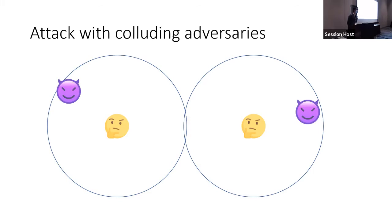Unfortunately, it turns out this is insecure if there are multiple adversaries that are colluding and trying to jointly convince the verifiers of an incorrect position. Two adversaries, one on each side, can jointly convince the verifier that they are in the middle, while in reality both are actually very far away from the position they claim to be.